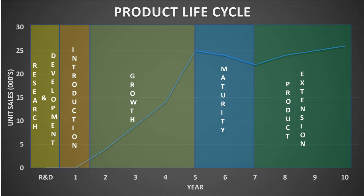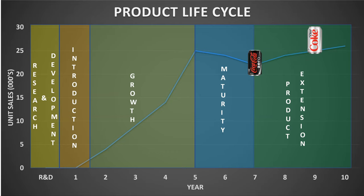If you consider the life cycle of Coca-Cola, when their original product — Coca-Cola Classic — hit the maturity stage, they have had many strategies over the years to extend their brand and their core product. This is typically through something called a line extension, one of the most famous being a product mainly targeting females to purchase the famous soft drink.